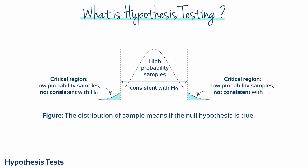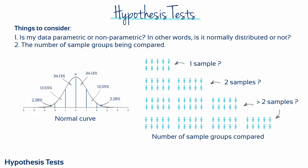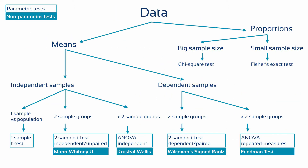It's one of the most commonly used inferential procedures. In this module, the primary goal is to be able to choose appropriate tests for a given research situation. There are basically two things to consider: number one, is your data parametric or non-parametric — in other words, is it normally distributed or not — and secondly, the number of groups being compared: one, two, or more than two. This flowchart outlines the decision process to reach the appropriate hypothesis test.